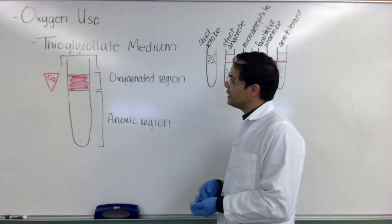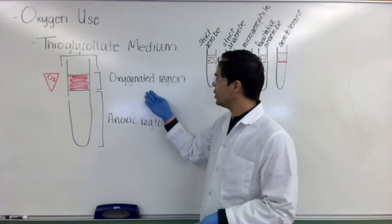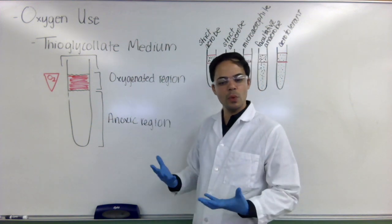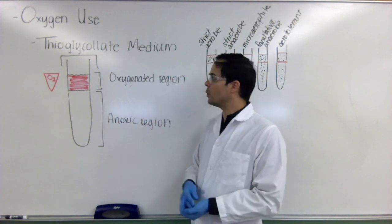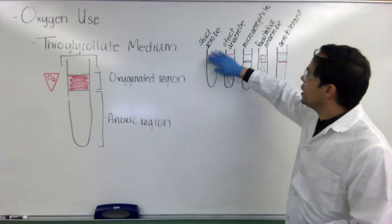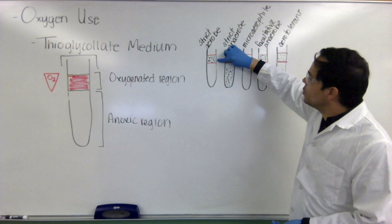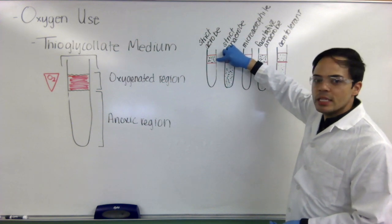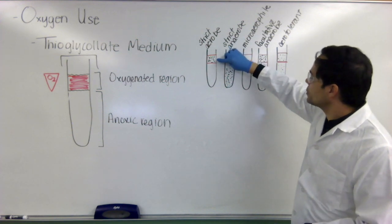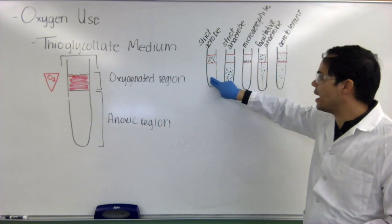So what that provides us in this tube is an oxygenated versus an anoxic region and then we can determine if the bacteria require oxygen such as strict aerobes and what we'll see is a growth pattern just in the oxygenated region but no growth in the anoxic region.